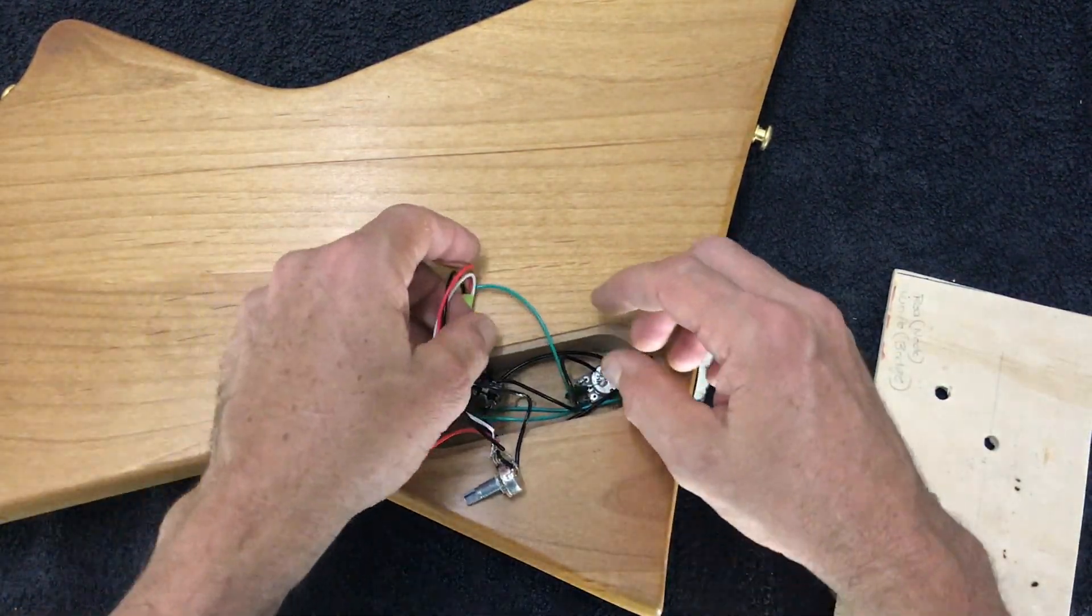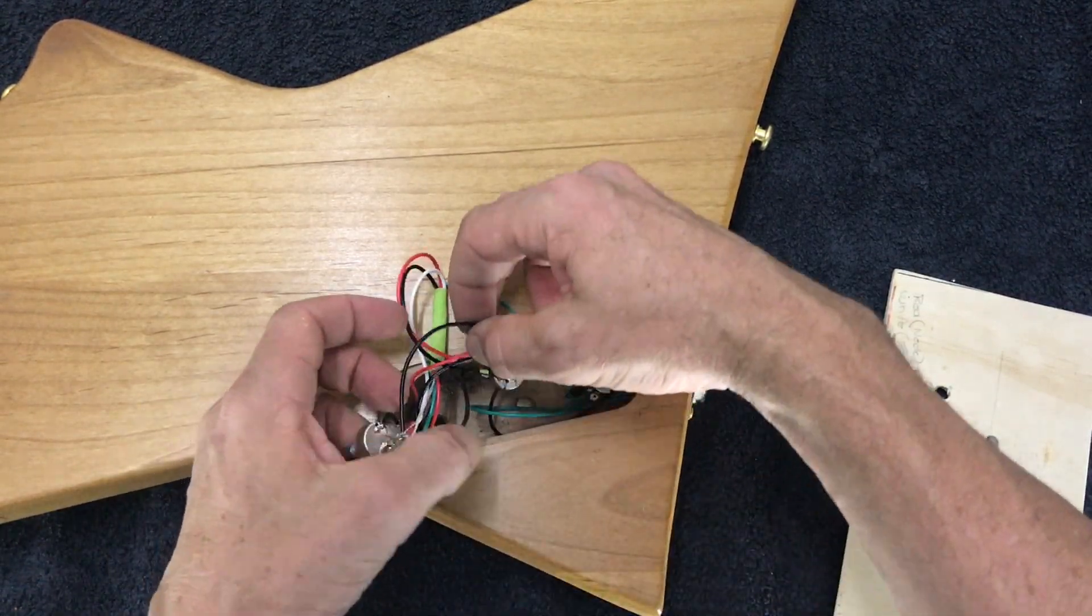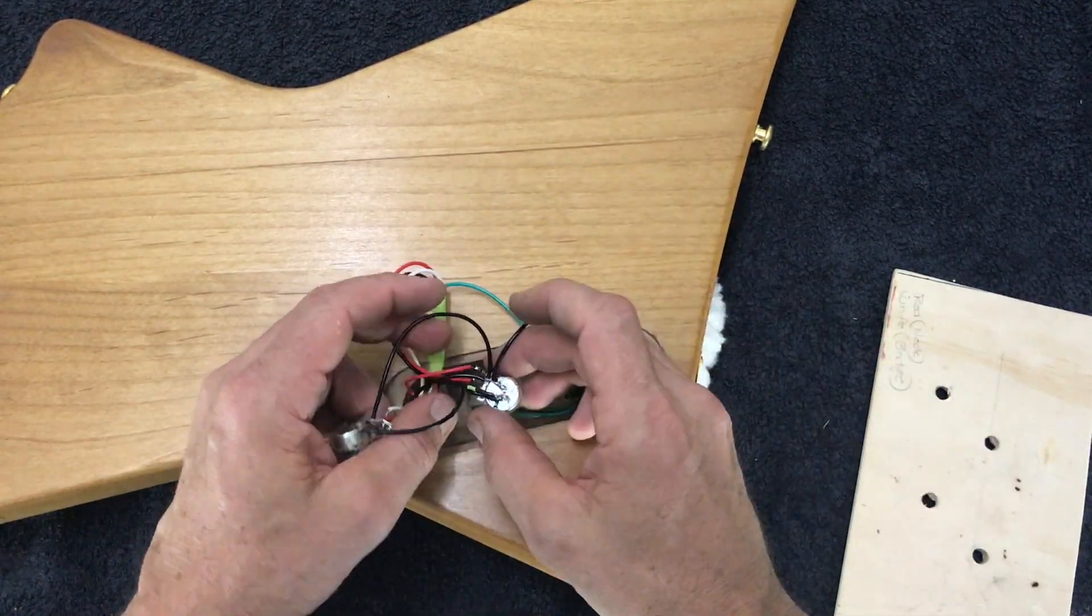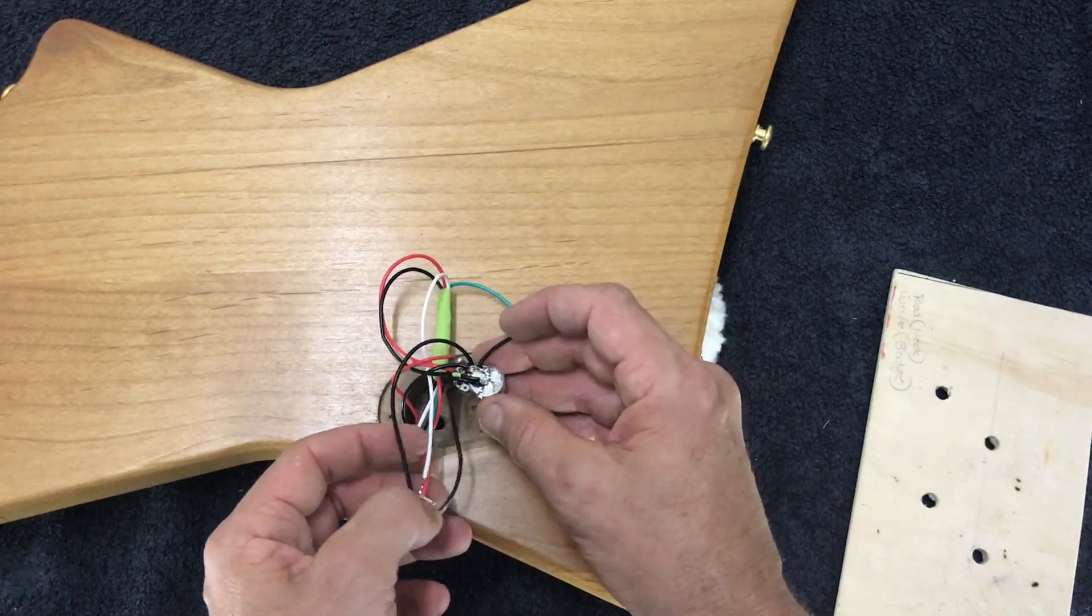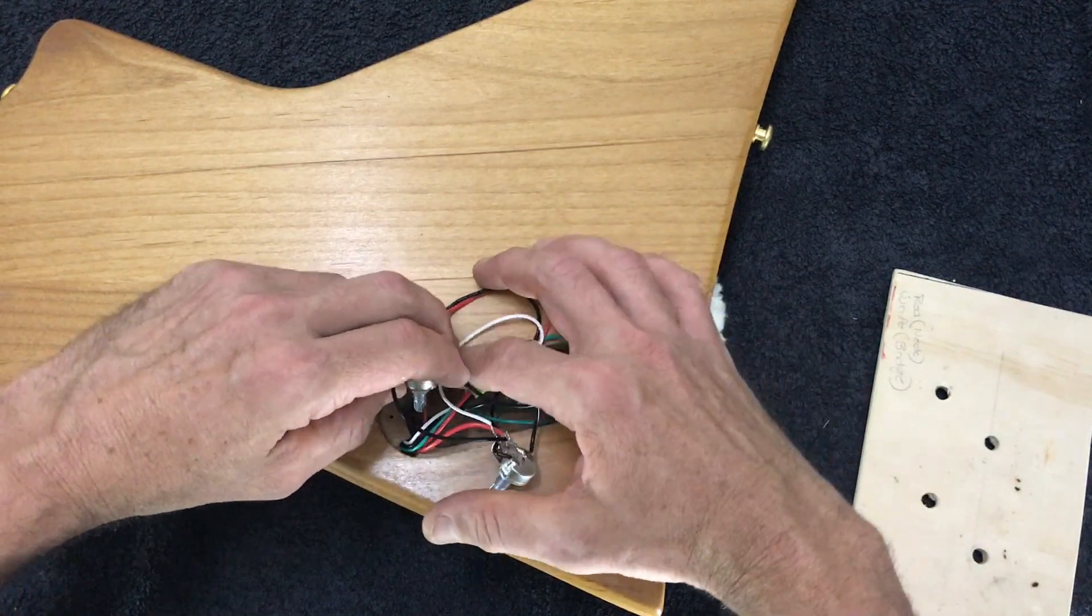From here, we can put our pots back in place. Just remembering which is which here. We know that the red was our neck and the white was our bridge.